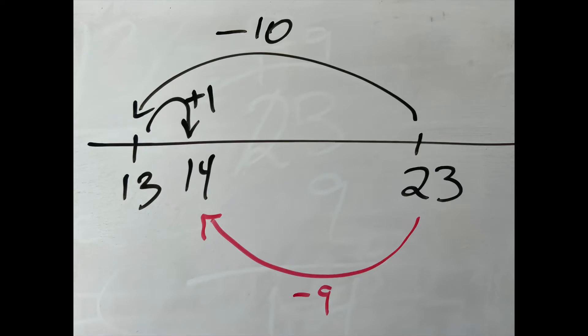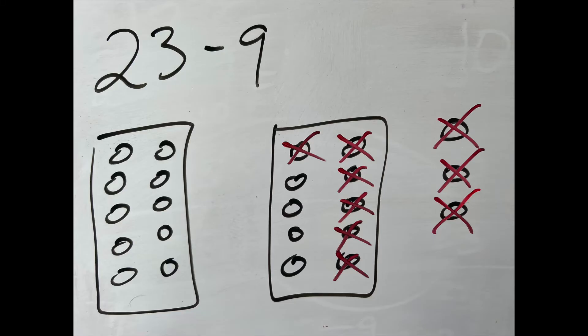Maybe you subtract 10 and then add one back in, and that's the same as subtracting 9. Maybe you draw 23 circles and then cross off nine of them.